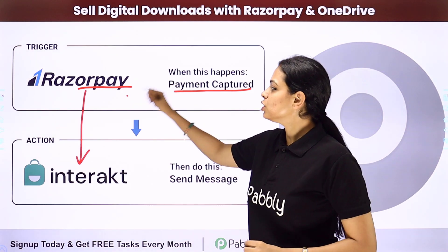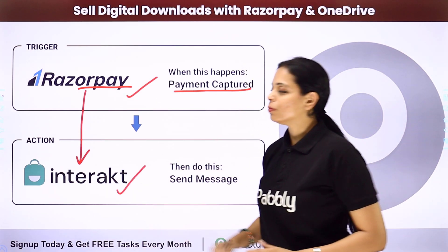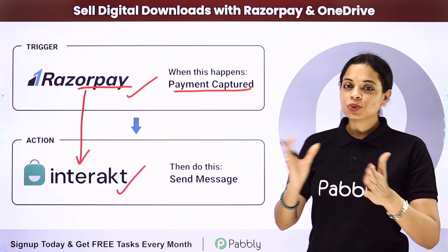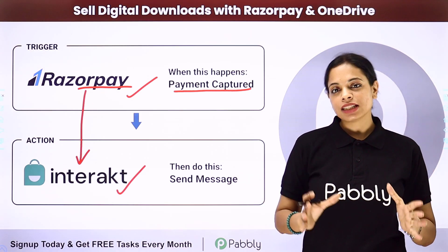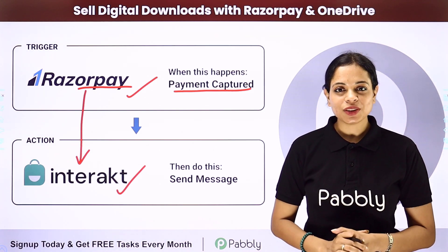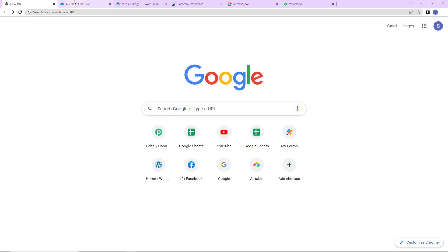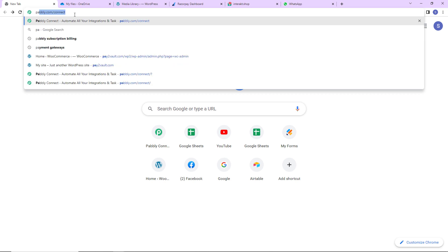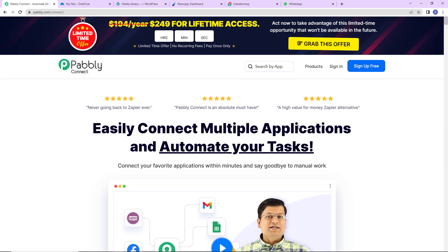Here my trigger application will be Razorpay and my action application will be Interact. To understand how to integrate and automate this entire process, let me take you to my screen. We are going to type the URL pabbly.com/connect and here we have reached the landing page of this software.